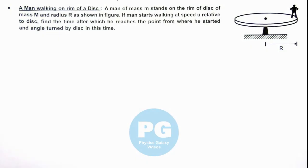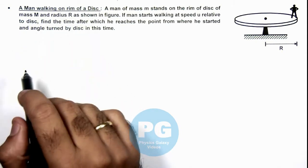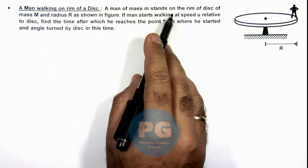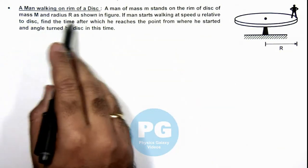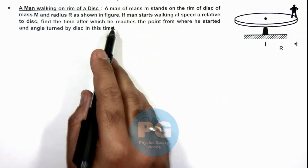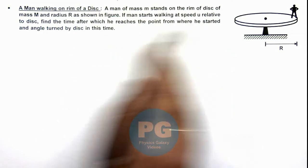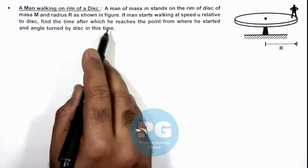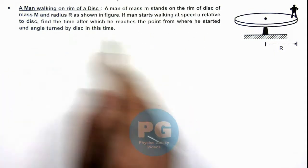In this illustration, we'll analyze a situation when a man is walking on the rim of a disc. We are given that a man of mass small m stands on the rim of a disc of mass capital M and radius R as shown in the figure. If the man starts walking at speed u relative to the disc, we are required to find the time after which he reaches the point from where he started and the angle turned by the disc in this time.